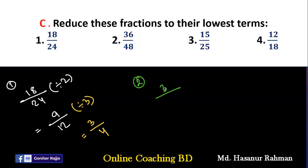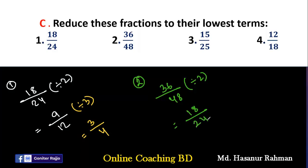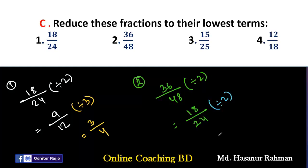Number 2 says 36/48. Both are even numbers, so we divide by 2 first, giving 18/24. Then divide again by 2, giving 9/12. Then divide 9 and 12 both by 3, giving 3/4. So 3/4 is the lowest term of 36/48.